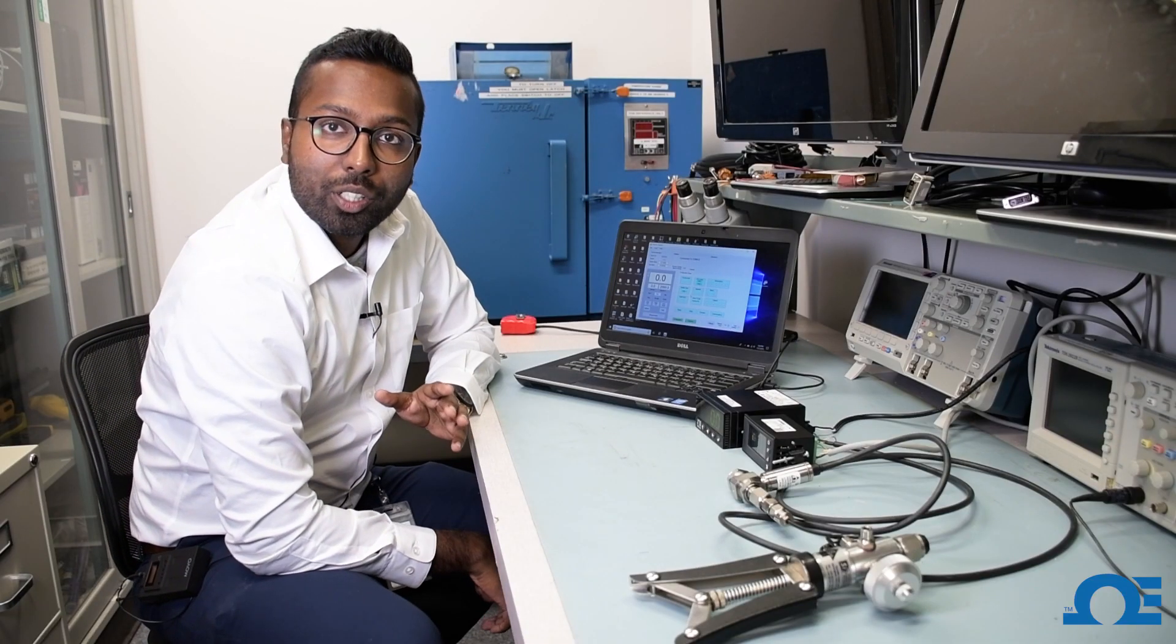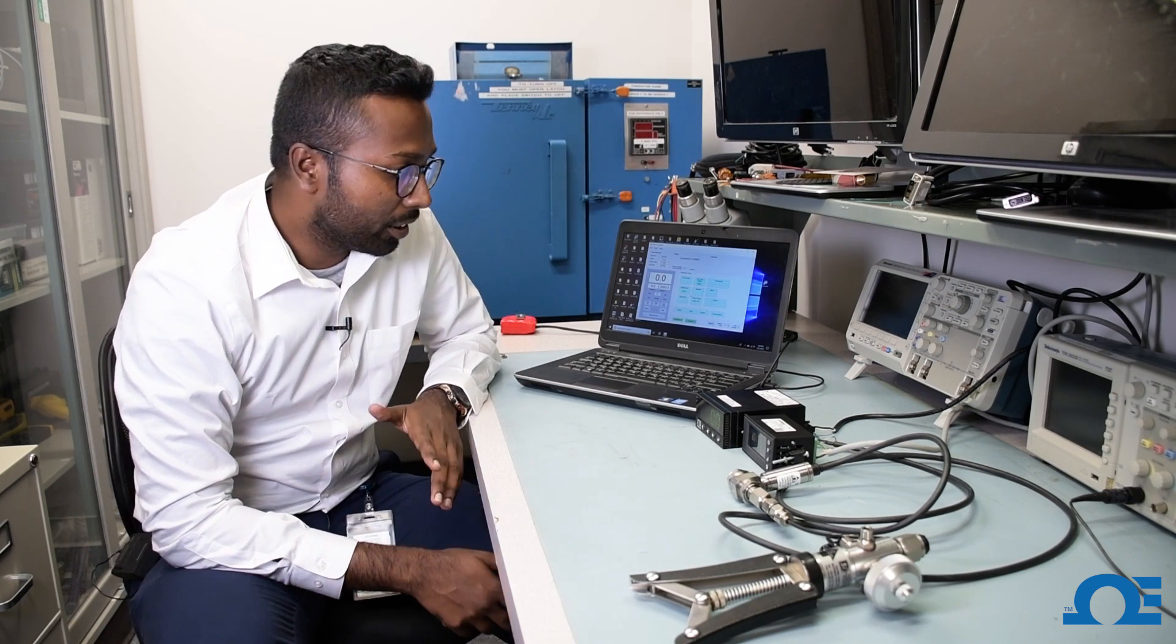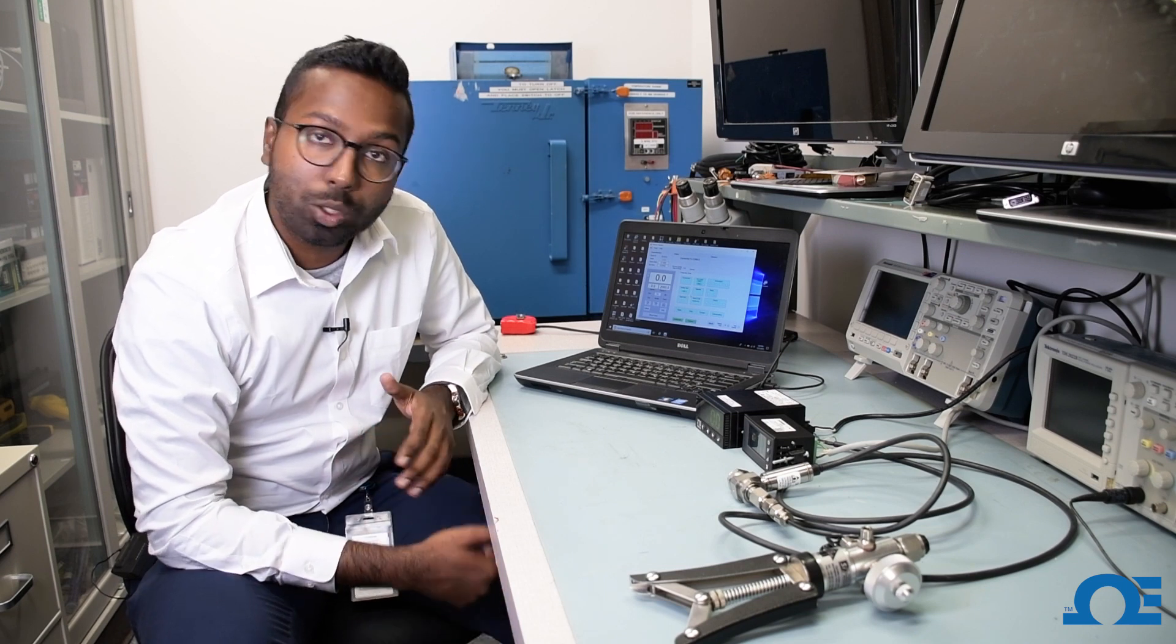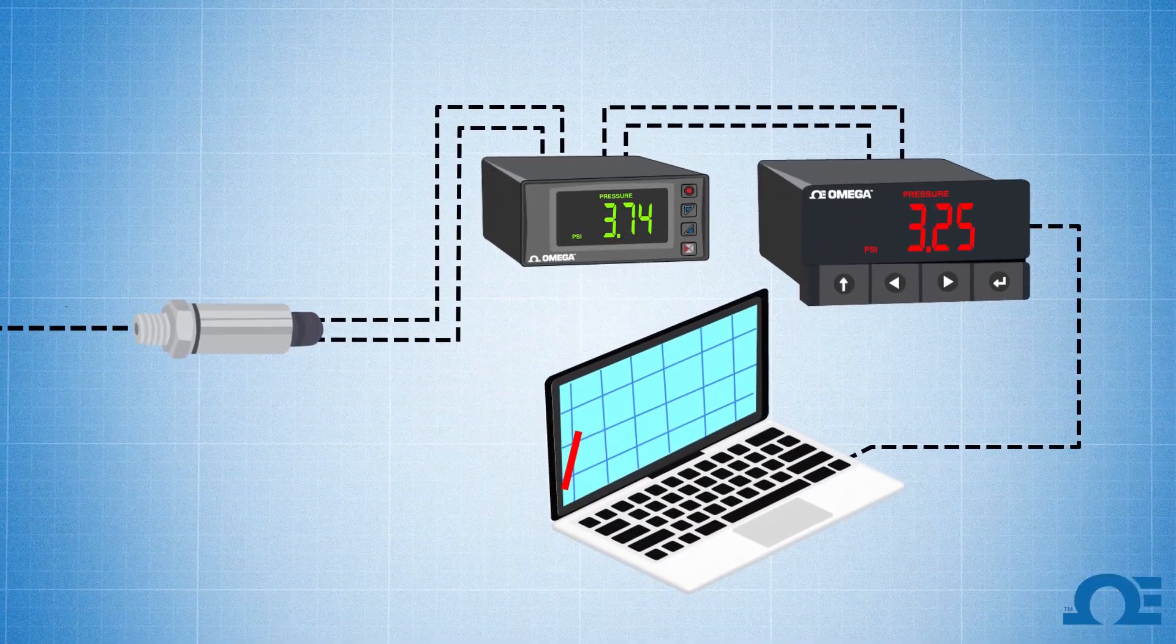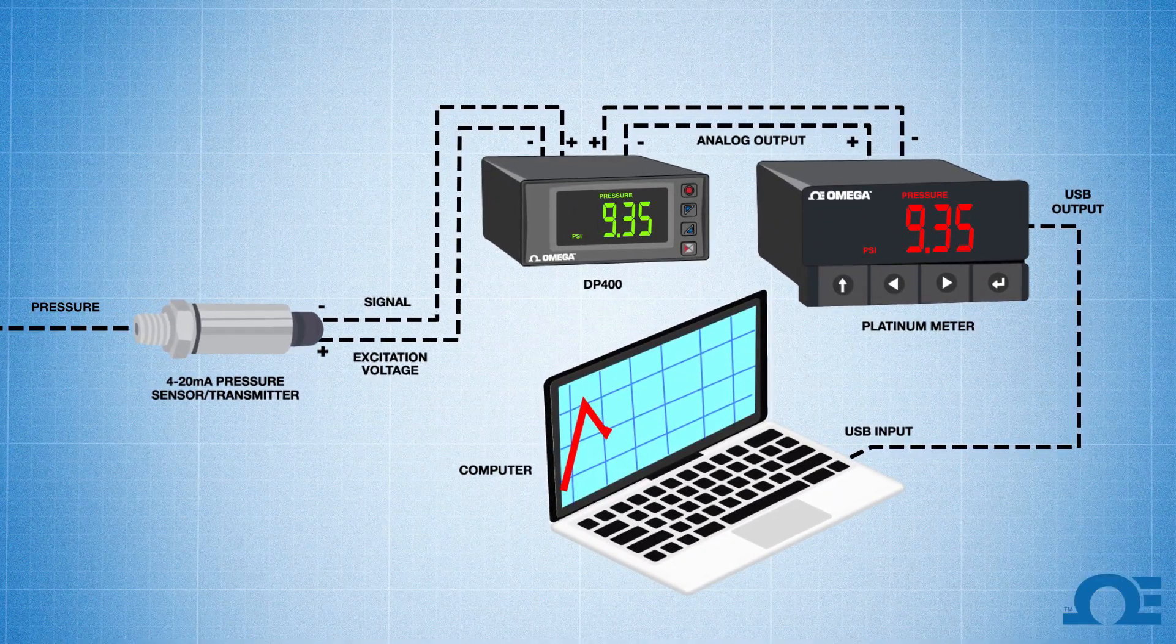So let's say you have a pressure transducer that puts out a milliamp output. Milliamp signals are typically connected in series to multiple devices, so it makes it super easy for connecting a milliamp signal device to multiple instrumentation units at the same time.